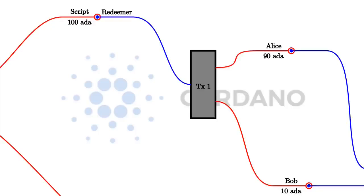There's one last ingredient that Plutus scripts need in order to be as powerful as Ethereum scripts — the so-called datum, which is a piece of data that can be associated with a UTXO in addition to the value. So at a script address, in addition to the ADA value, there can be an arbitrary piece of data attached, which we call the datum. With this, we can actually mathematically prove that Plutus is at least as powerful as Ethereum. Every logic you can express in Ethereum you can also express in this extended UTXO model.